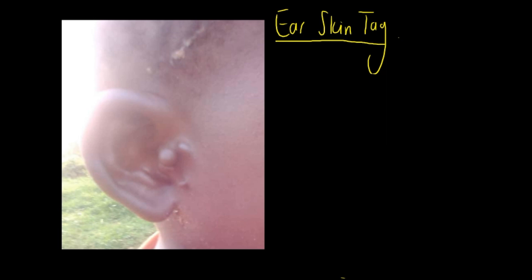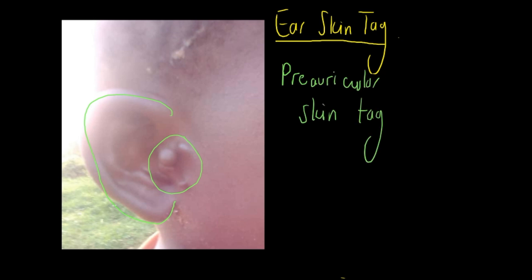This is an example of an ear skin tag in front of the ear, highlighted here. From the last video where we covered preauricular sinus, things in front of the pinna can be called preauricular. So this is an example of a preauricular skin tag. There are a couple of other terms used to describe these: an accessory tragus, or a branchial cleft remnant.